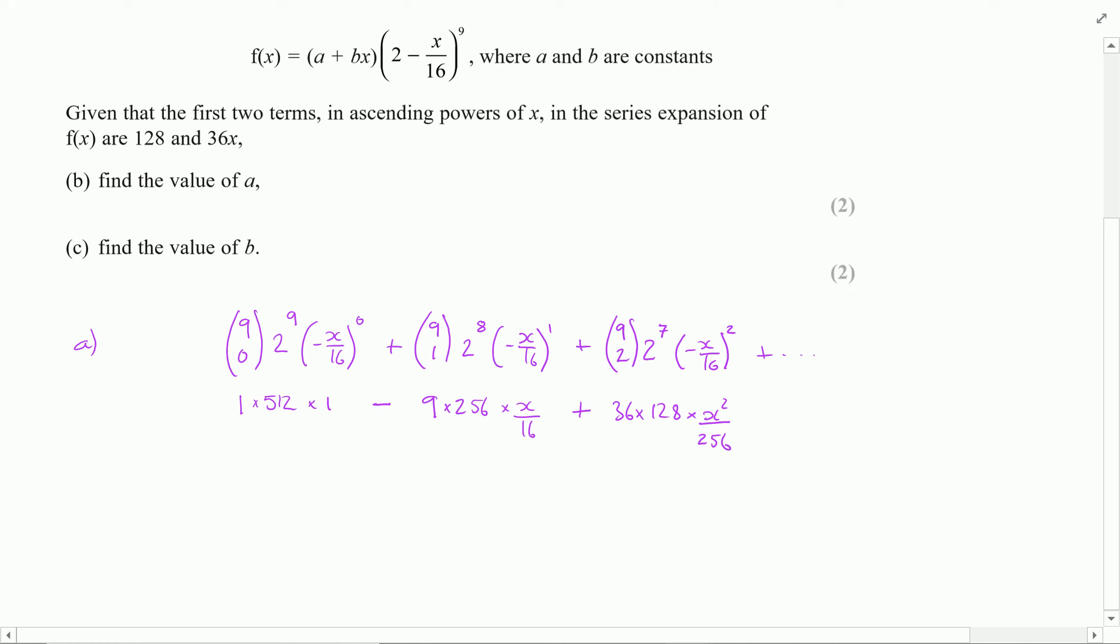Now I can resort to my calculator to then work out these final values. Probably not for the first one though because I can do that in my head. And the next one 9 times 256 over 16 essentially which is going to come out to be minus 144x. And in the last case this is going to give me 18x squared. Maybe no calculator needed. And that's it for part A.